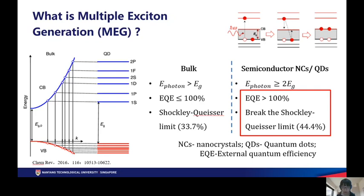Normally, in the bulk semiconductor, the hot carrier cooling process is extremely fast and the relaxation time can be as short as one picosecond, resulting in inefficient utilization of photon energy and limiting the maximum power conversion efficiency. As a result, the external quantum efficiency cannot surpass 100%, and the highest efficiency of the single-junction solar cell, also known as the Shockley-Queisser limit, is 33.7%.